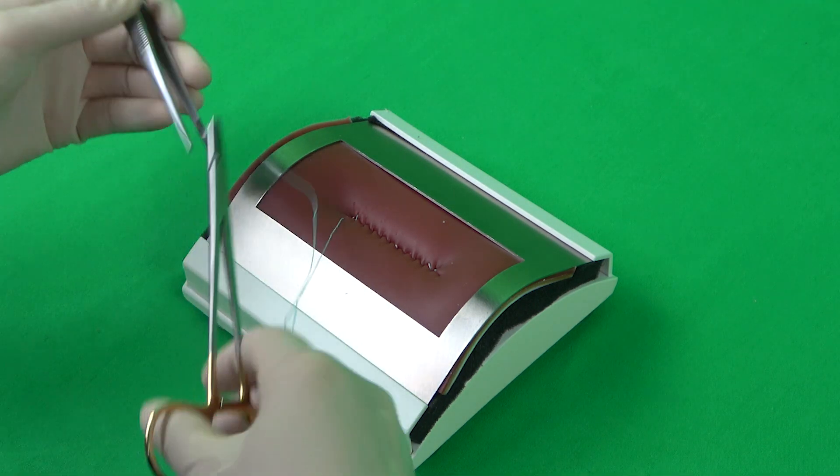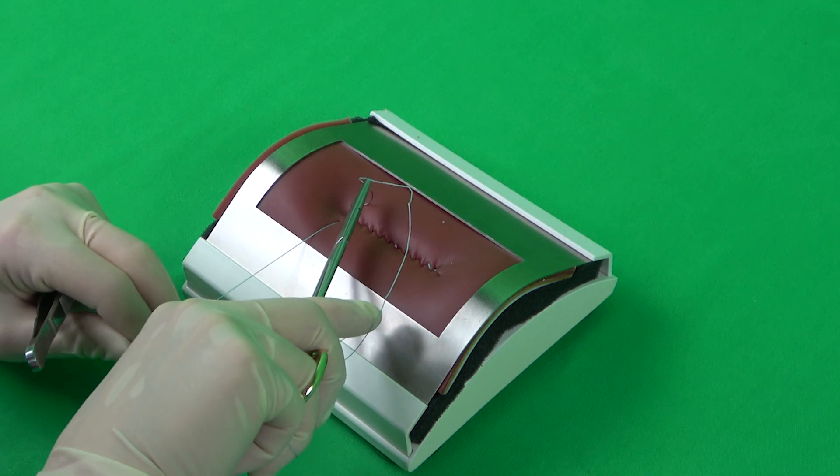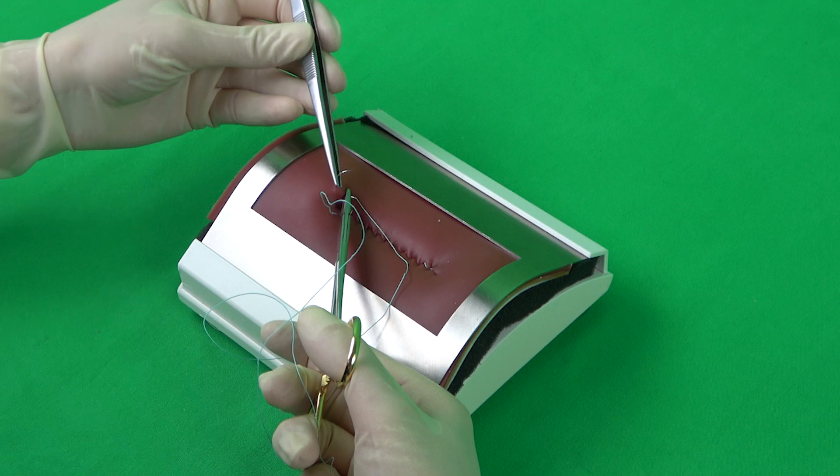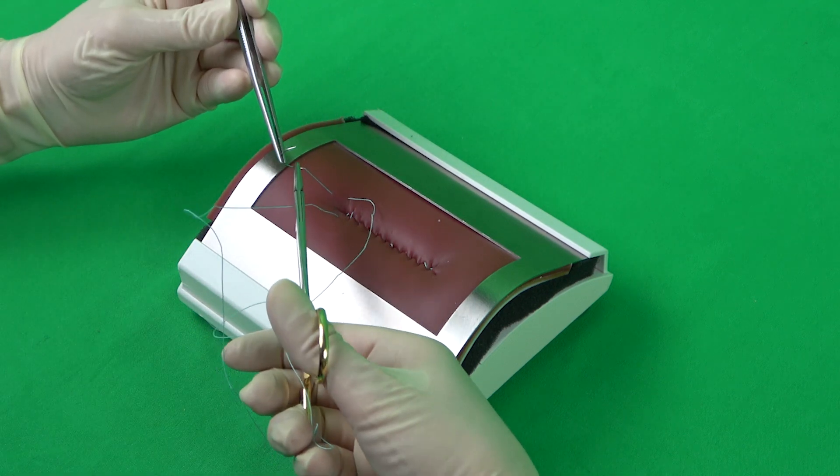The suture is once again finished with a V-shaped perforation outside of the wound gap. While tightening the suture, it is important to leave a loop after the first stitch, as this will be required for the closing of the knot.